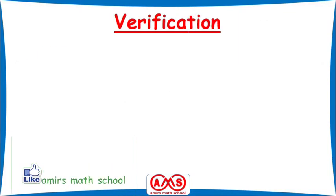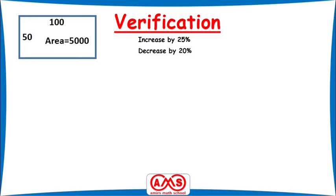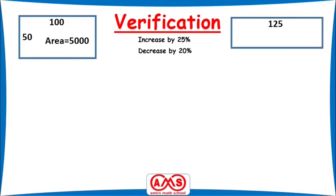Now let's verify the answer. This verification process is also one easy way to solve this type of problem. First, let's take one rectangle with length 100 and breadth 50. The area of the rectangle is length times breadth, so the area is 5000. According to the question, the length is increased by 25%, and we calculated that the breadth should be decreased by 20%.